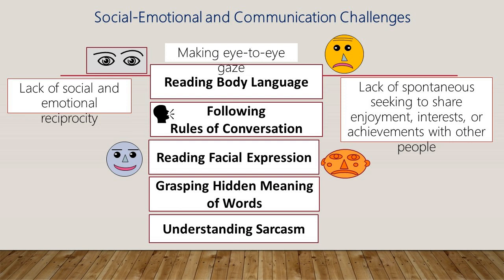One of the major challenges that children with autism spectrum disorder have is social, emotional, and communication challenges. We all talk about how they may have difficulty with making eye contact, but beyond that — do they know how to read the body language of others? Do they know how others are feeling? Reading and interpreting how others feel, especially when someone is upset or sad — do they know how to engage in that emotional reciprocity?